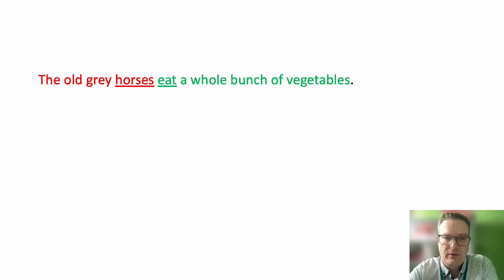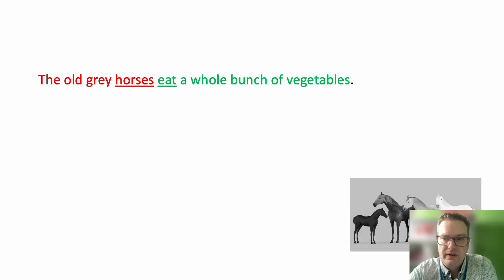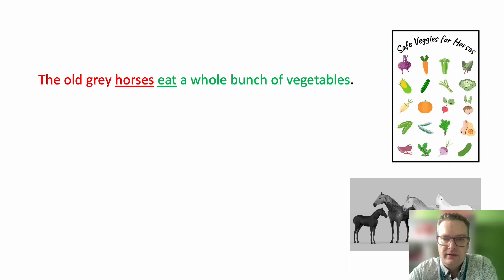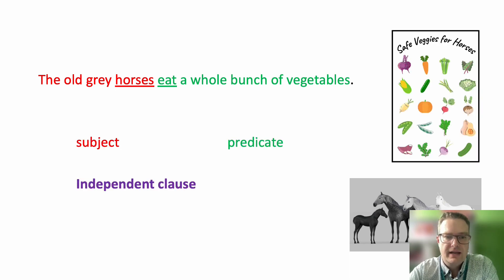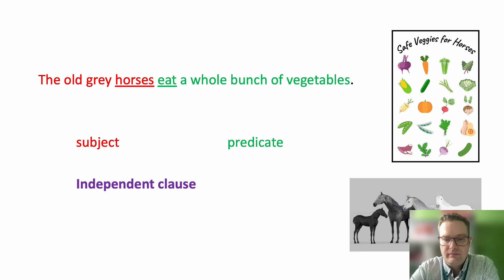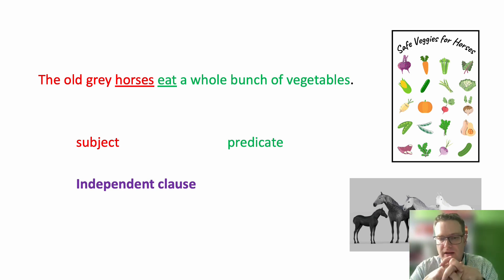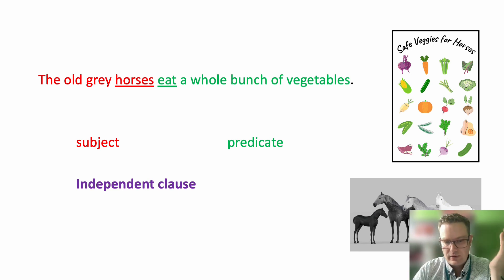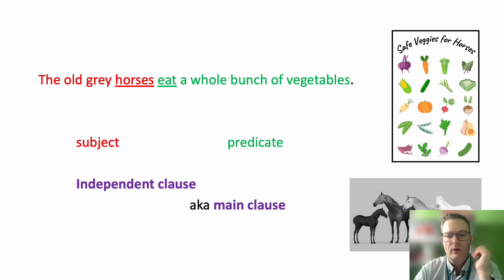Something like: the old grey horses eat a whole bunch of vegetables. You've got your veggies and you've got your horses — subject and predicate. Together, you could call this an independent clause, in that it's just one simple sentence. It's a completely fine sentence. It's got a subject and it's got a predicate. So that stands alone, completely fine on its own. Besides just calling it a sentence, you can call that an independent clause — or you might also see main clause. They mean the same thing, at least as far as we're concerned.